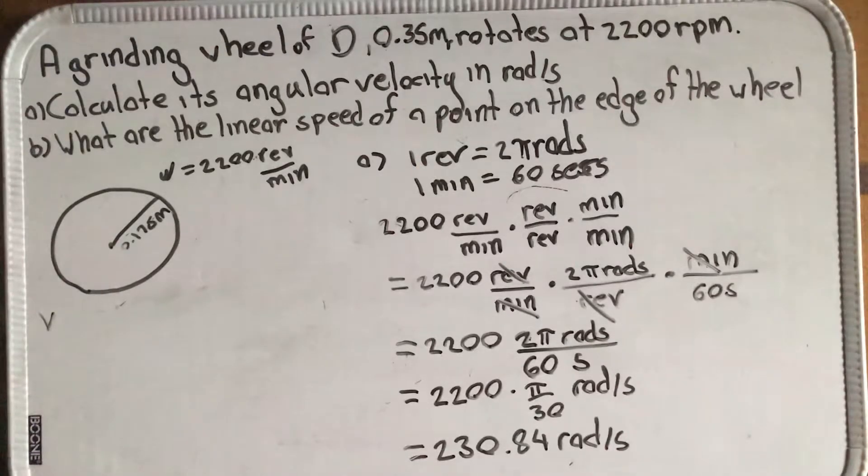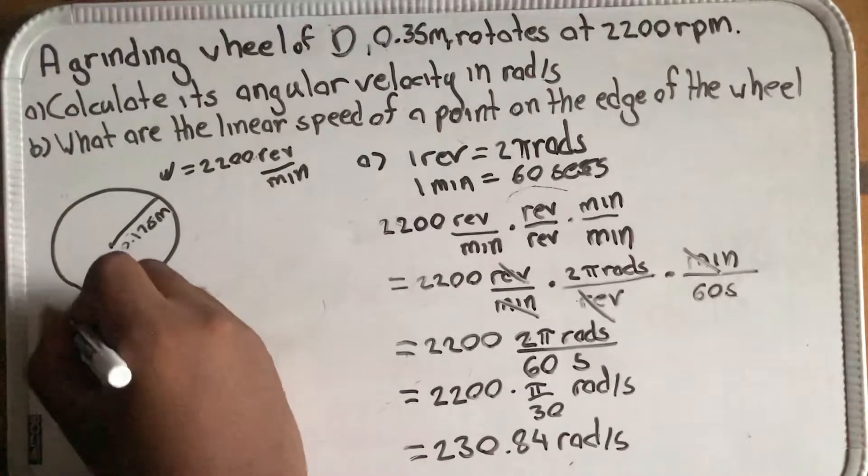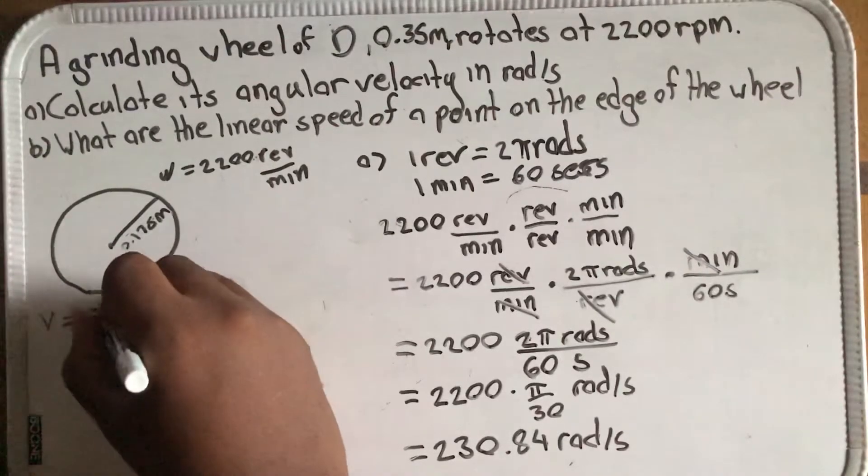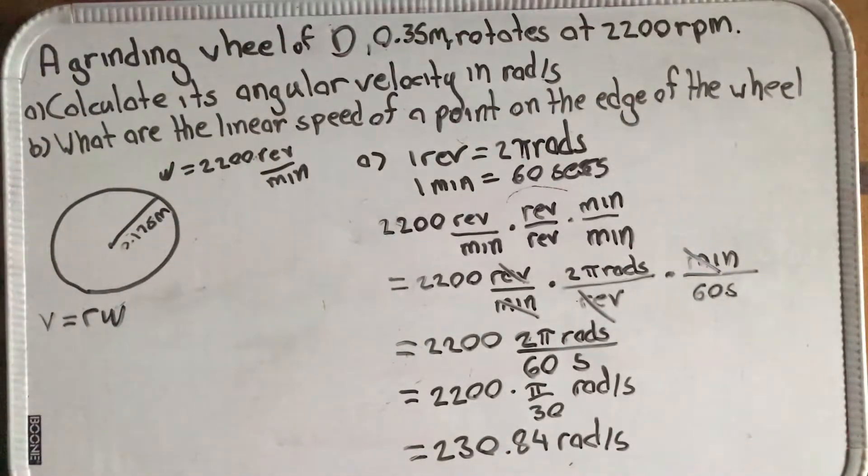The beautiful thing about this is that the linear speed is equal to the radius multiplied by the angular velocity. The linear speed of a point on this rigid body is related to its angular velocity by the distance of that point from the center or from the point of rotation. So the linear speed is equal to the radius multiplied by the angular velocity.